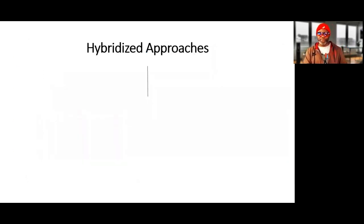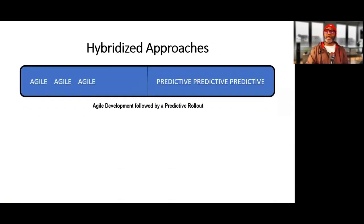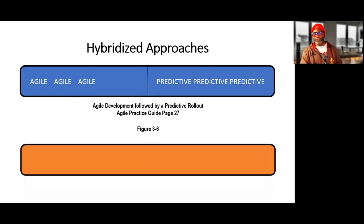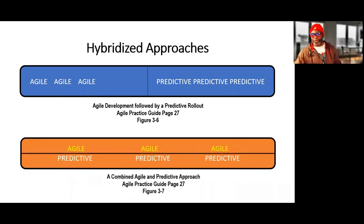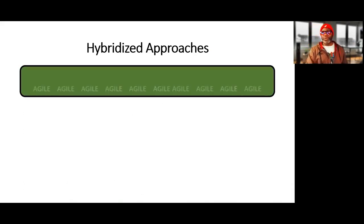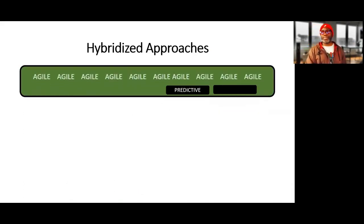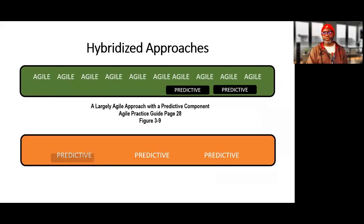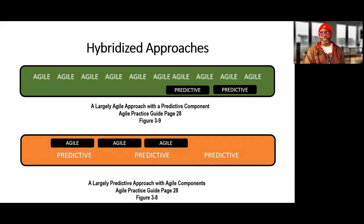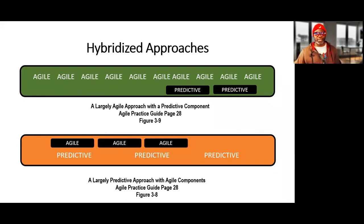Still in chapter three, hybridized approaches are now here. We can have Agile development followed by a predictive rollout, or an Agile and predictive approach on top of each other — I call that an Agile-predictive sub. Or you can have a largely Agile approach with a predictive component, or a largely predictive approach with Agile components.